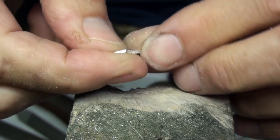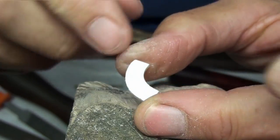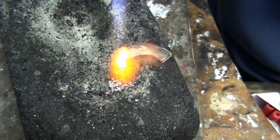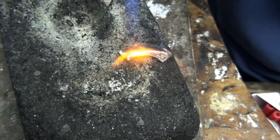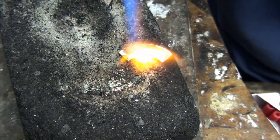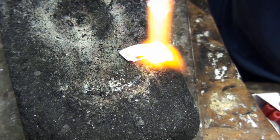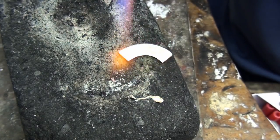Before we form the setting, we need to anneal it and remove the paper. The paper will just burn off when you anneal it. Don't set off any alarms. Make sure the room is ventilated.